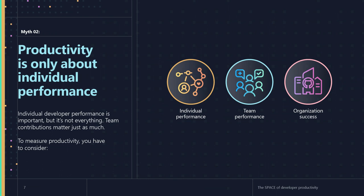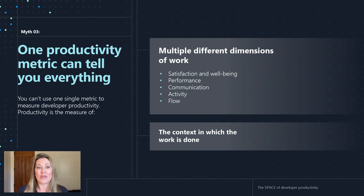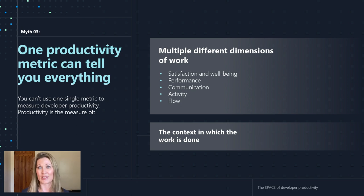Another common myth is that there's one key metric that matters — if I can just boil it down to one signal. But this isn't true because productivity is about a handful of dimensions: communication, activity, flow. It's also about the context in which the work is done — how is the team working, what does our system look like, what is the architecture, what are the challenges we're facing? So many things are different, and the goal is to just do better. Are we doing better?